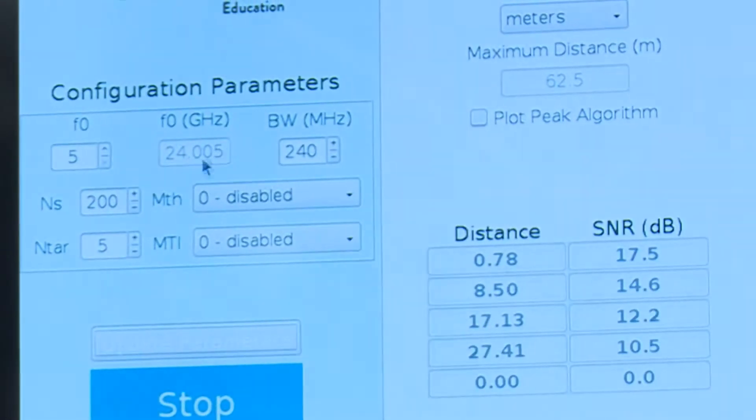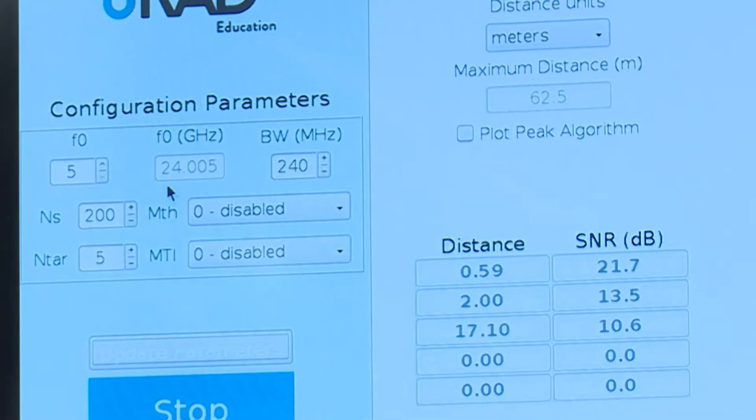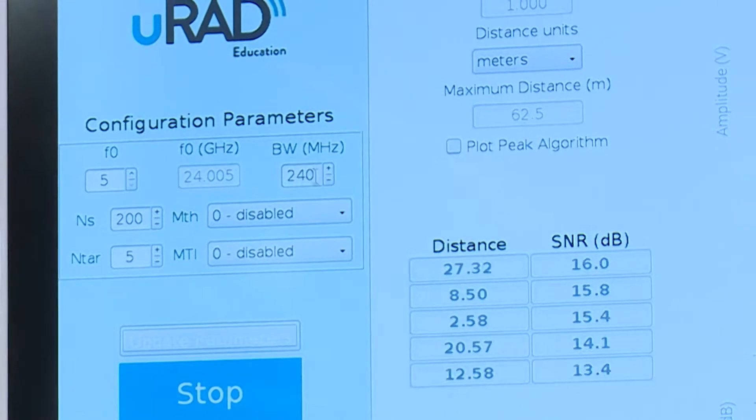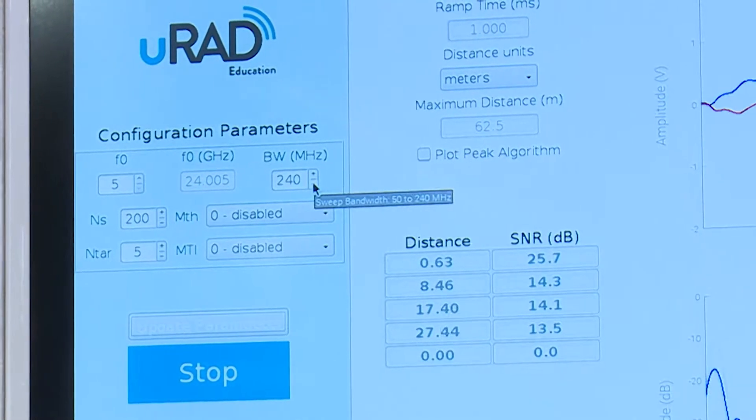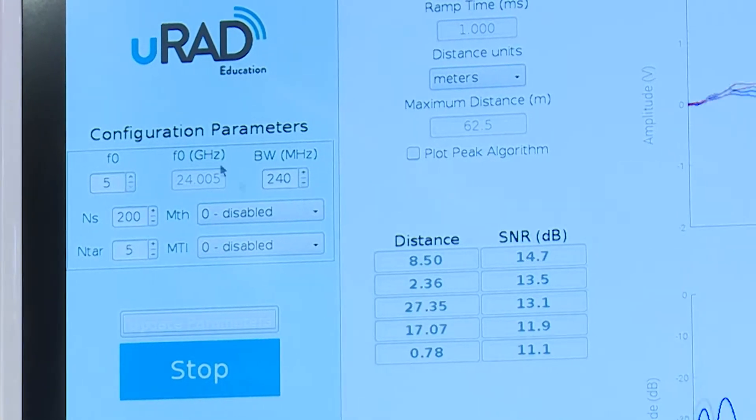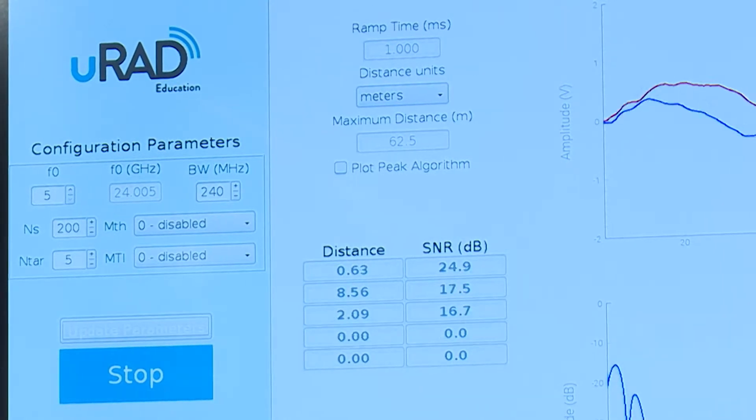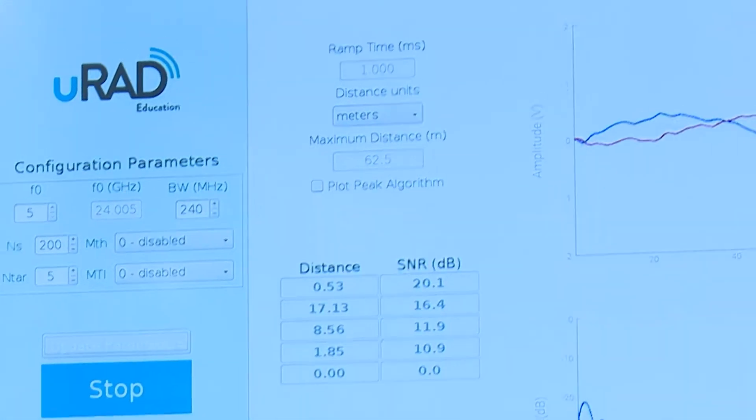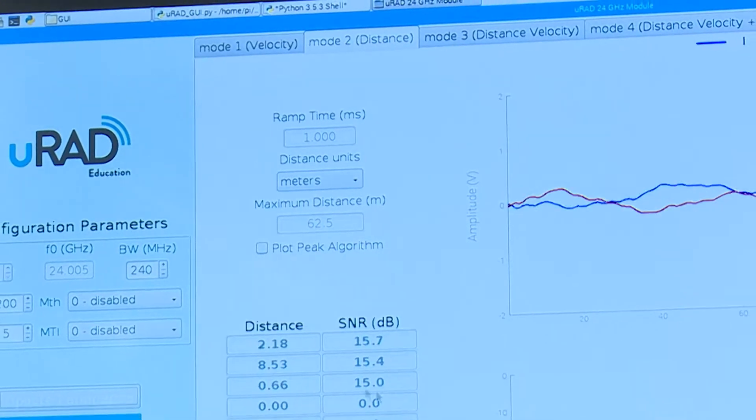Here you can see the frequency that we are working, which is 24 GHz. But we can also select the bandwidth that we want to use. Once the user has done this, they can also select the mode of operation they want. So, for example, here we are measuring different targets at different distances, which are also sampled here.